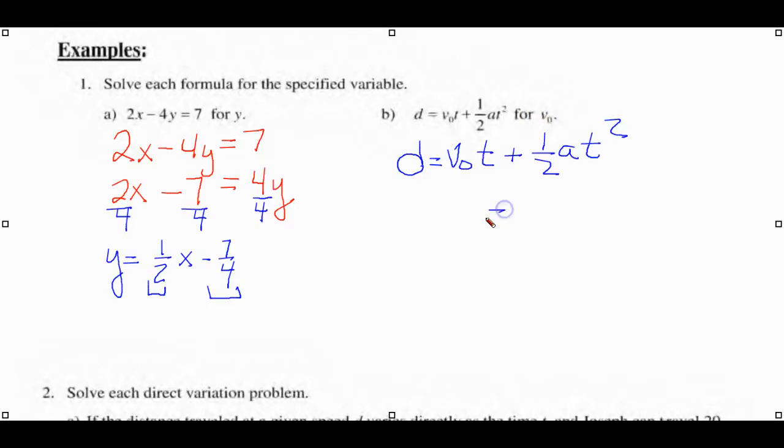What we want to do first is get this term over to the other side, so we just transpose it and change its sign. And that equals V O T, that's V sub O for initial velocity.